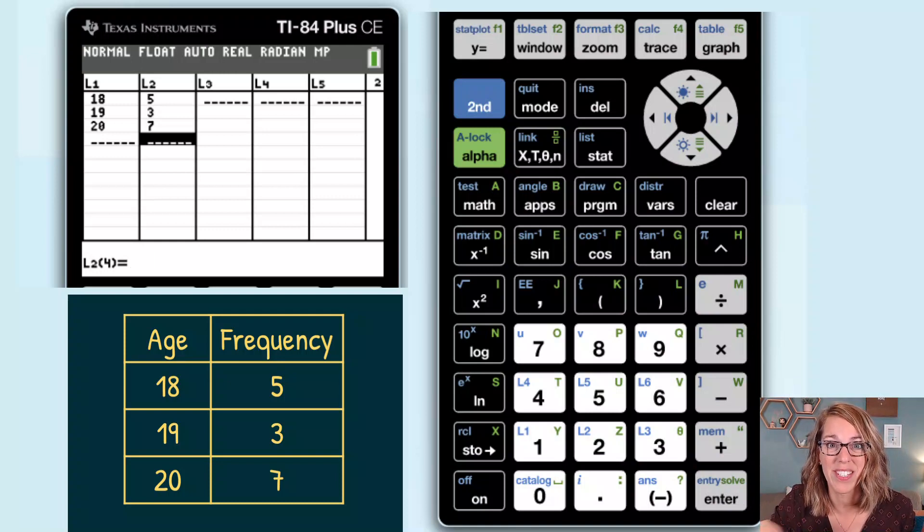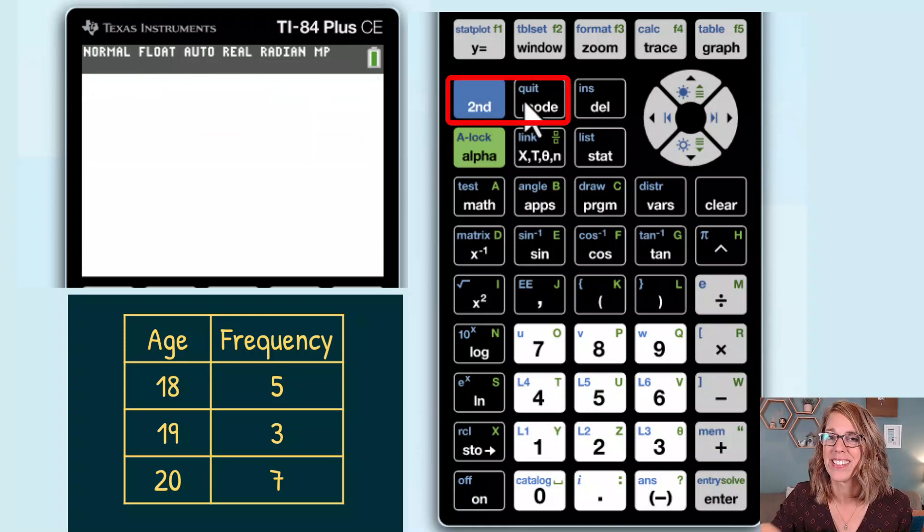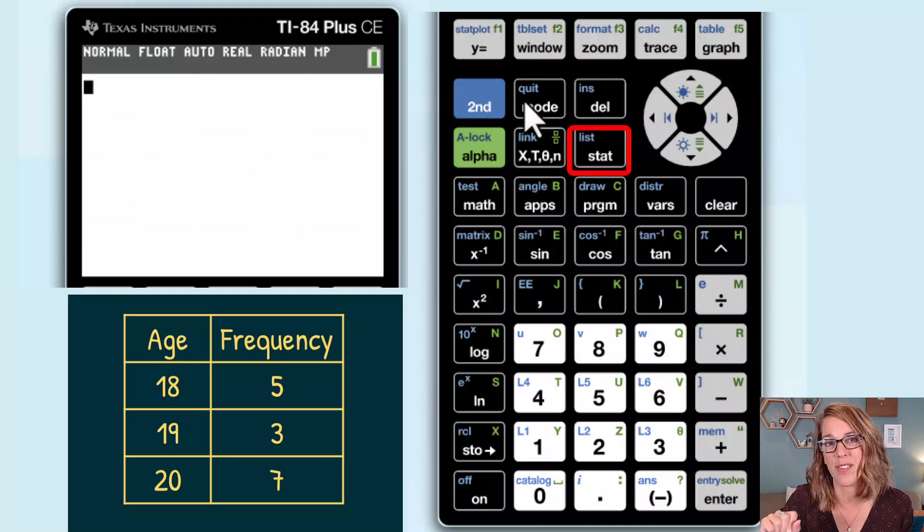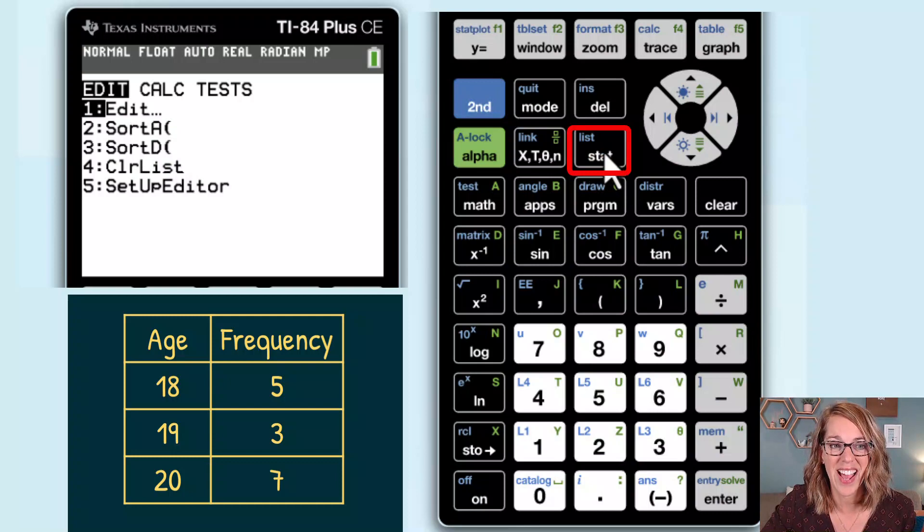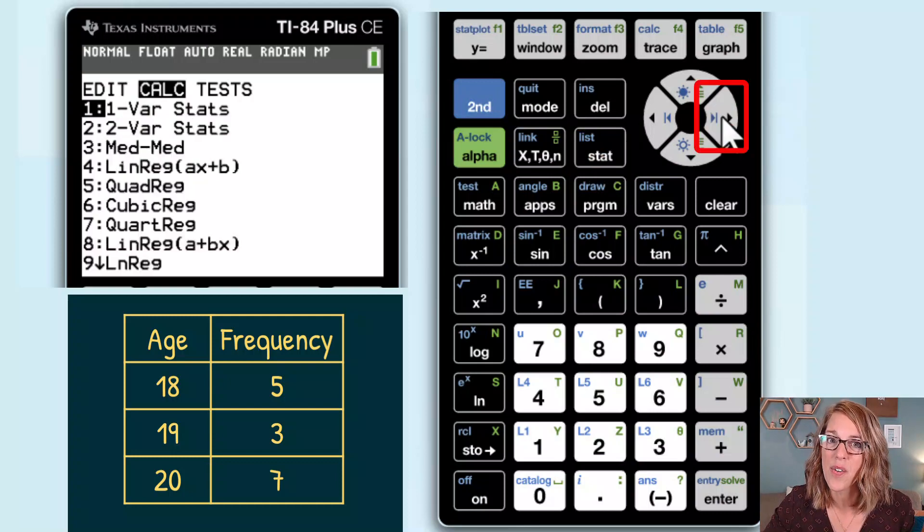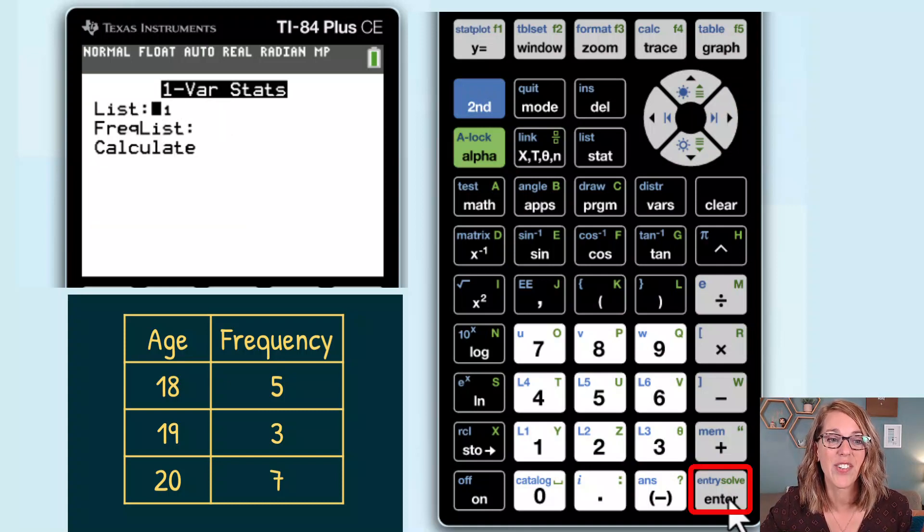Now let's go find some statistics. I'm going to quit here. So second followed by quit. Let's go back into the stat menu so we can run one variable statistics. I click stat. This time I arrow over to choose the calc menu. I do want one variable statistics. So I'm going to hit enter here.